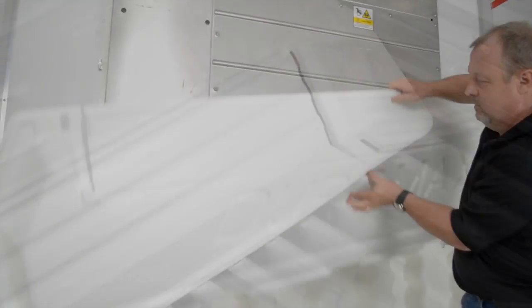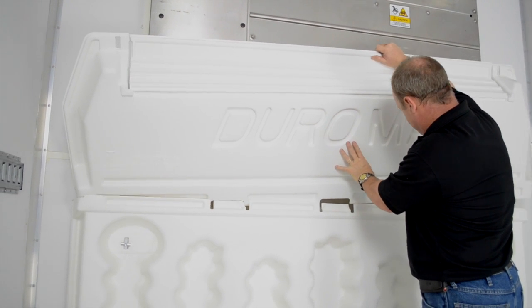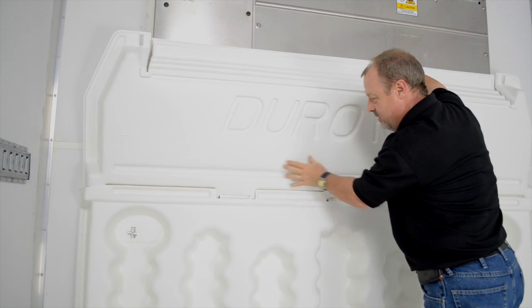Cut the plastic tabs on the top Duramax. Position the top section at a 45 degree angle on top of the bottom section to engage the three locking tabs. Tilt the top section back into position.